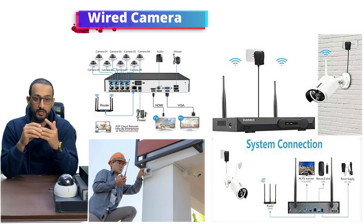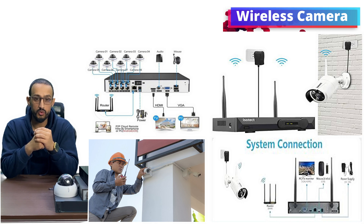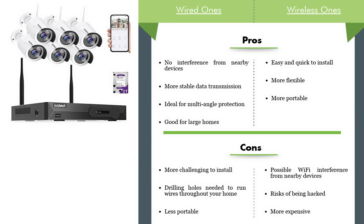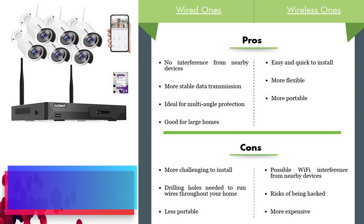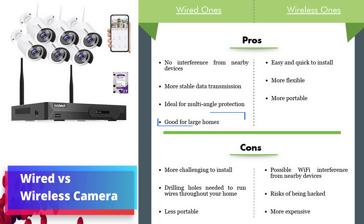The third type of security camera is wired versus wireless security camera. Wired cameras can be connected via wire and wireless cameras can be connected through wireless signal. The pros or advantages of wired cameras are: no interference by nearby devices, stable data transmission, ideal for multi-angle protection, and good for large homes or businesses.